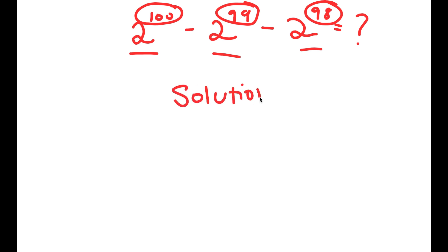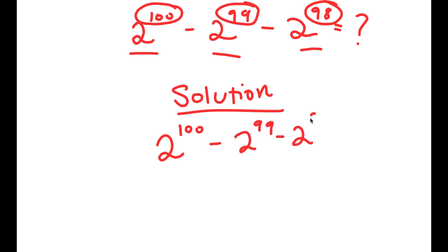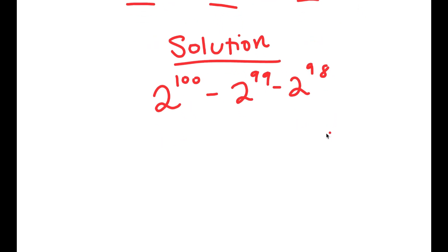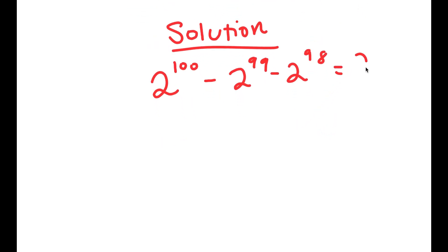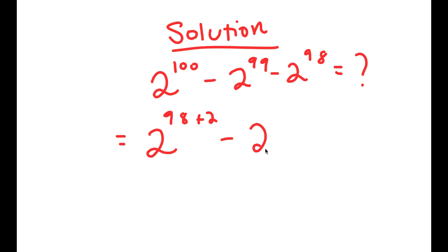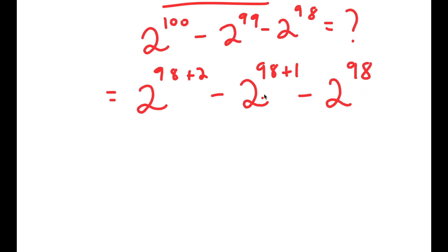For my solution, let's start by rewriting our problem here so we have more space to solve it. What I'm first going to do is rewrite all of my powers with 98 in them. So 2 to the power of 100 — well, 100 is the same thing as 98 plus 2. 2 to the power of 99 is the same thing as 2 to the power of 98 plus 1. And 2 to the power of 98 we leave alone. This is going to be much easier to solve, as you'll see in a second.